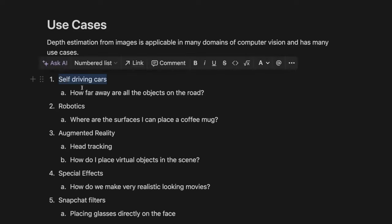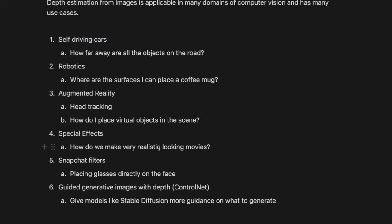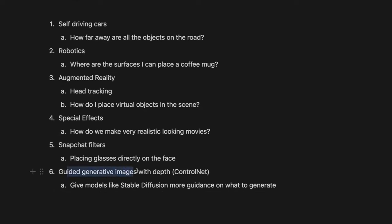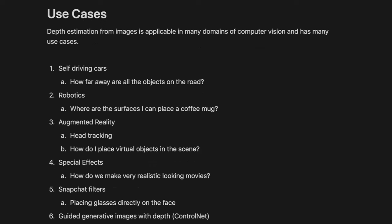So anything from self-driving cars — like how far are all the objects on the road — robotics, where are the surfaces I could place my coffee mug, augmented reality like head tracking and placing virtual things in the scene, special effects, Snapchat filters. There's even some cool guided generative image techniques called ControlNet — they use these depth maps to give Stable Diffusion more guidance on what to generate. A lot of use cases, and I'm excited to come back to computer vision land.